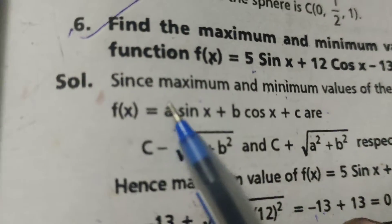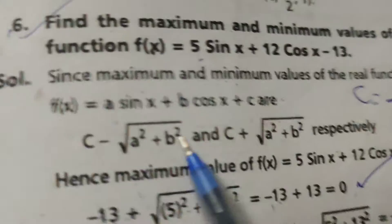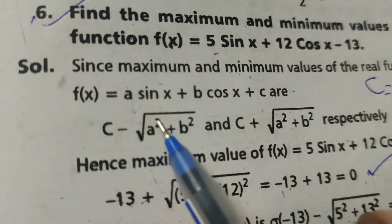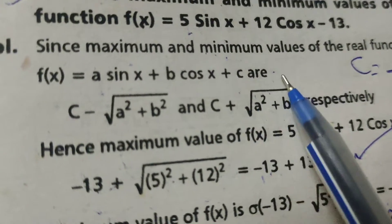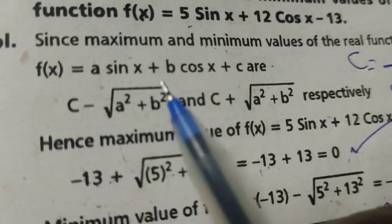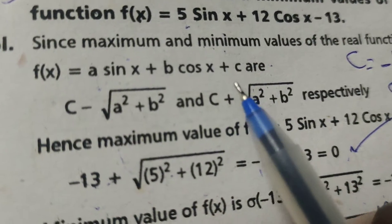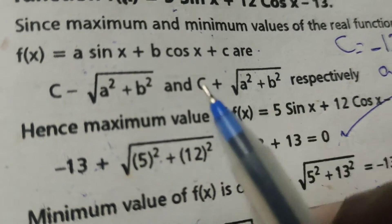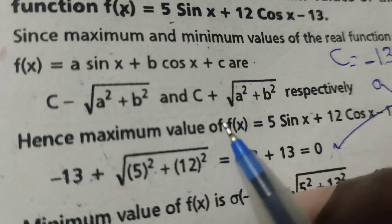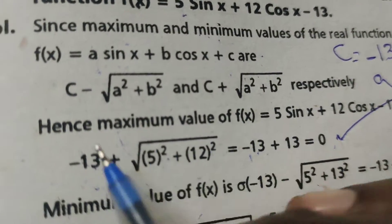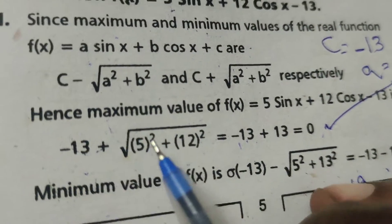We already know the formula: for the real function f(x) equals a·sin x plus b·cos x plus c, the maximum value is c plus the square root of a² plus b², and the minimum value is c minus the square root of a² plus b².